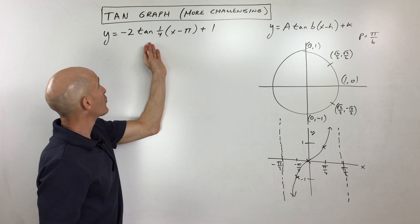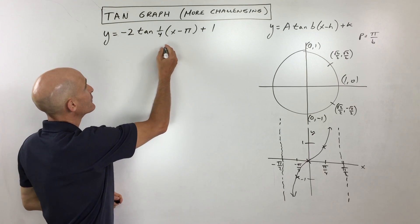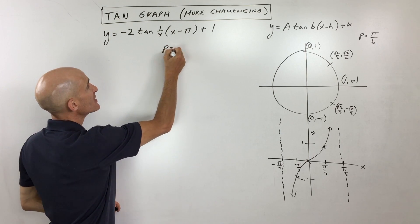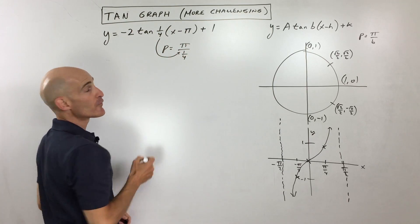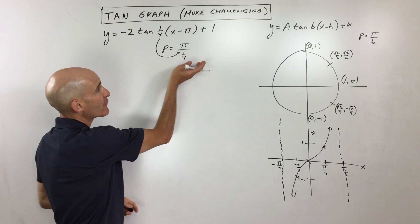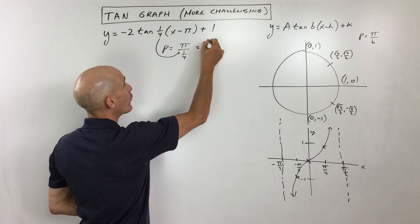So now if we want to graph this more challenging graph, what we can do here is let's go ahead and figure out the period first. So the period is equal to pi divided by b, which in this case is 1 fourth. Now remember, when you divide by a fraction, it's like multiplying by the reciprocal. So that's going to make this period 4 pi.